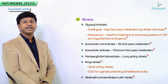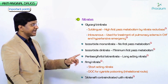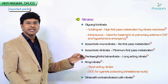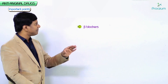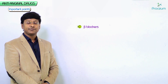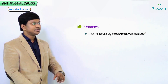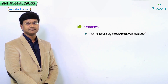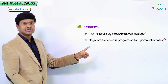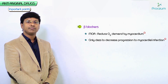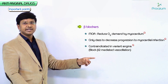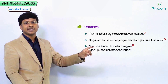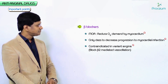Sildenafil is contraindicated in patients on nitrate therapy. Regarding beta blockers: they act by reducing oxygen demand by the myocardium and are the only class that decreases the progression to myocardial infarction. Beta blockers are contraindicated in variant angina as they can block beta-2 mediated vasodilation.